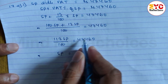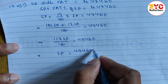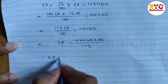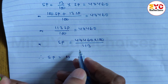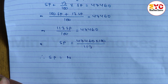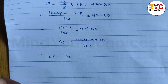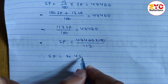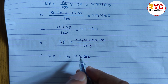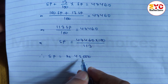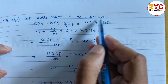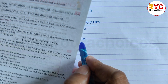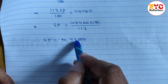So SP is equal to Rs. 47,460 multiplied by 100 divided by 113, which equals Rs. 42,000. The original price — what the retailer pays excluding VAT — is Rs. 42,000.